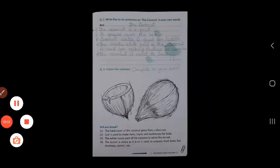Now what is this coir used for? Coir is used to make mats, chatai, ropes and mattresses for beds. So this coir is a very thick fiber and we can make mats, ropes and mattresses with it.